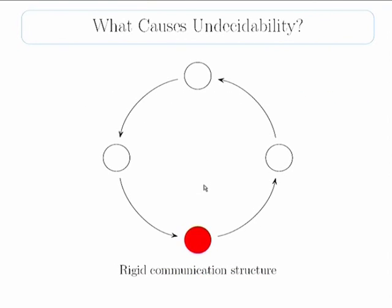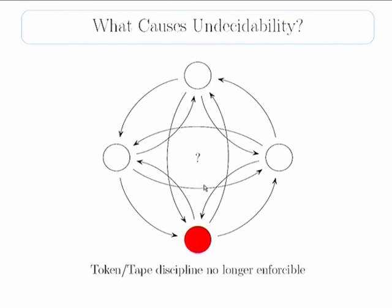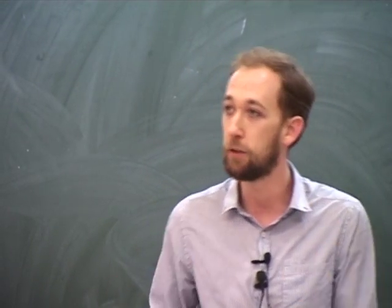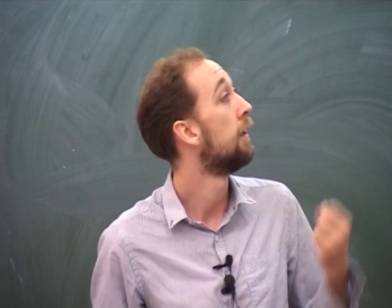We're still undecidable, so we have to think about why. In this case, the ring communication structure makes the whole simulation work — moving the Turing machine head left means talking to your left neighbor, and right means your right neighbor. So the first decidable results in this area basically said: let's break this whole system and have a situation where we don't know who we're talking to. If you want to talk to your left neighbor, you can try, but you have no guarantee it will actually go left — it could go right or somewhere else entirely. If you require that communication goes to some node in the network but not to a particular node, then you get decidability.